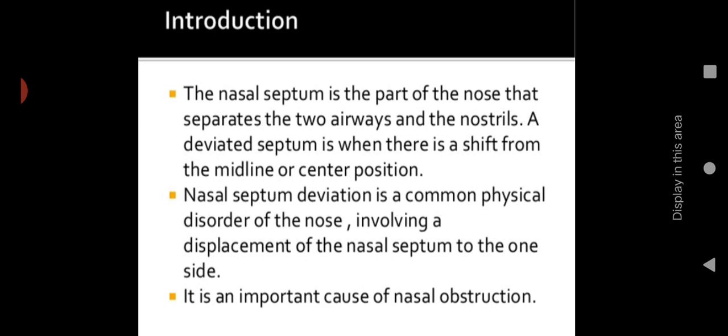When you go through the anatomy and physiology of the nose, you can see that both sides of the nose are separated by a septum — a bony cartilage. That is called the nasal septum, and it separates the two airways and the nostrils. Between the two openings of the nose, in the middle, there is a bony cartilage portion called the nasal septum. A deviated nasal septum is when there is a shift from the midline or center position.